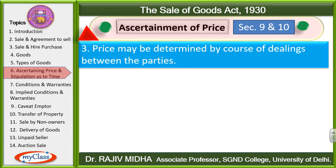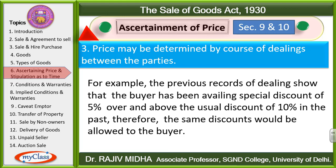Price may be determined by course of dealings between the parties. For example, previous records of dealing between a buyer and seller show that the buyer has been availing a special discount of 5% over and above the usual discount of 10% in the past. So in the current dealing also, the same 15% discount would be allowed to the buyer, based on how the parties have dealt in the past.